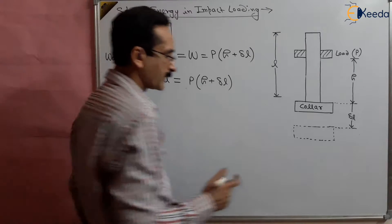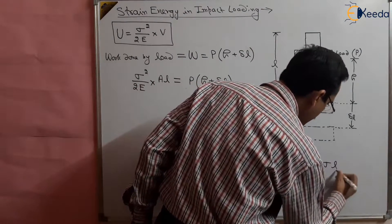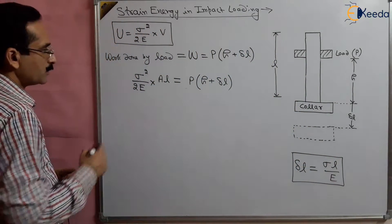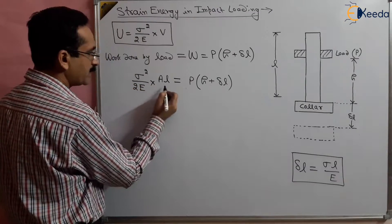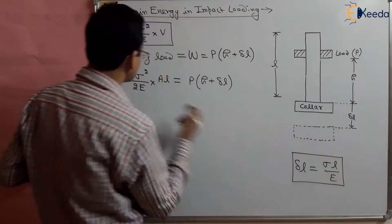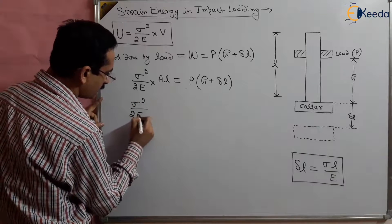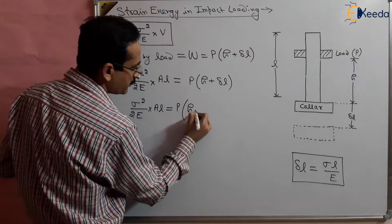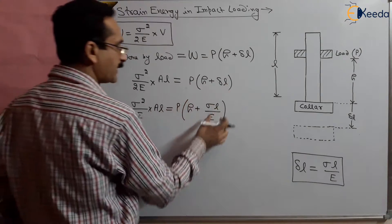Now, what is delta L? Delta L equals sigma L upon E — that we have already studied. So substituting, sigma squared over 2E times AL equals P(h plus delta L), and this delta L can be replaced with sigma L upon E, as we studied in the first chapter.